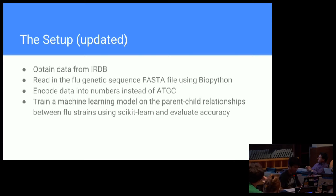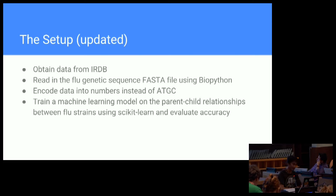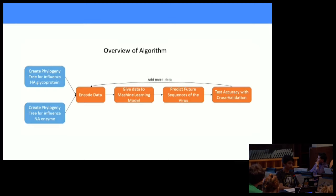So with BioPython and scikit-learn by my side, this is my updated setup. The first step stays the same — I still get the data from the Influenza Research Database. Next, I would read in the flu genetic sequences using BioPython. I also had to add another step, which is encoding the data. With scikit-learn, it only takes numerical input, so I had to encode those genetic letters into numbers. The last step stayed pretty much the same, except instead of writing my own algorithm, I would use the scikit-learn library.